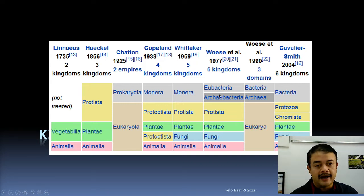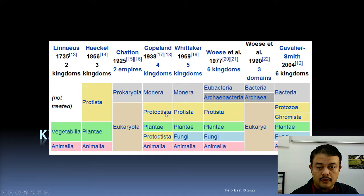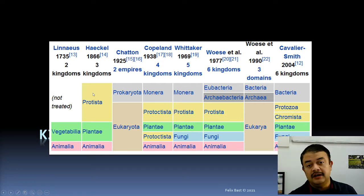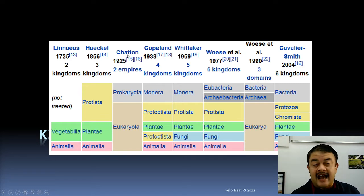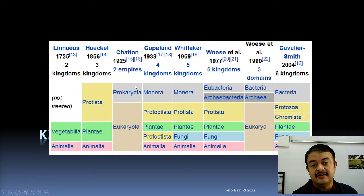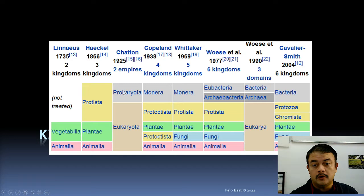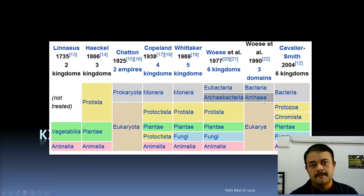The treatment of prokaryotes has changed across systems: from Monera, to eobacteria and archibacteria, to bacteria as a whole, to Protista and Chromista. Chatton in 1825 proposed two empires — prokaryotes and eukaryotes — which is somewhat similar to Carl Woese's domain system from 1990. Woese split prokaryotes into Archaea and Bacteria as separate domains, with Eukaryotes as the third.